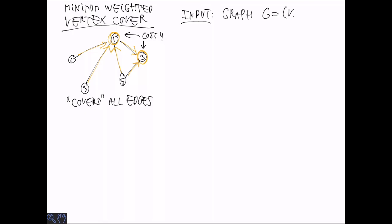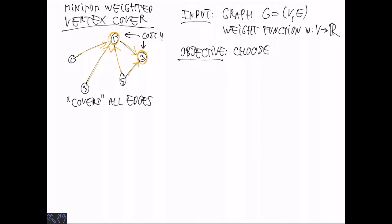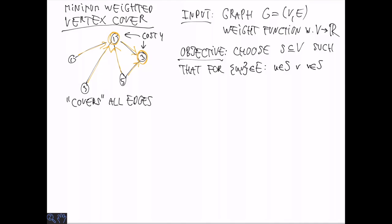Formally, we have an input graph and a weight function that maps vertices to real numbers. We want to choose a subset S of the vertices such that the sum of weights is as small as possible, subject to the constraint that for every edge, either one endpoint or the other endpoint is in S, or both.